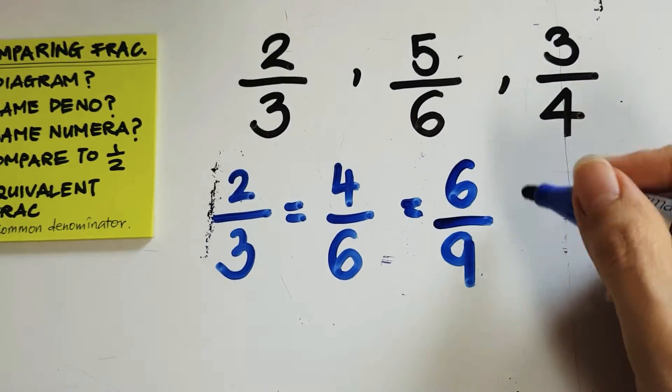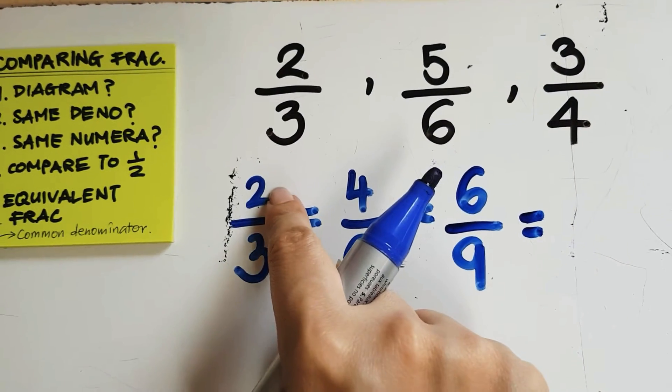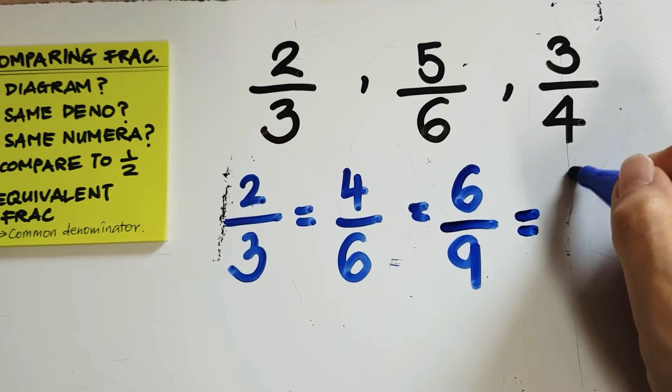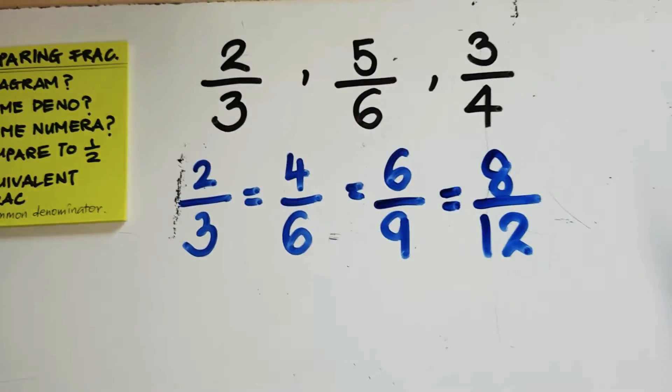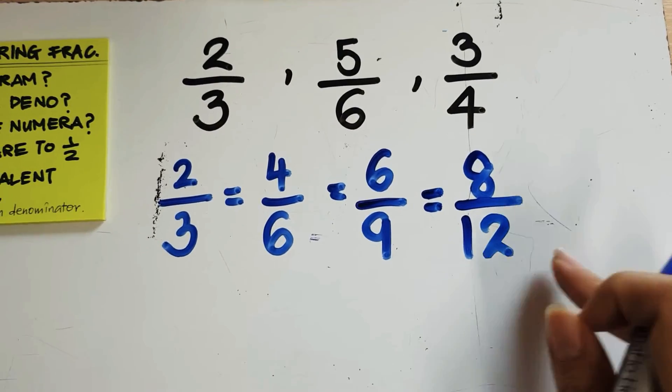And I'm going to go on. Next equivalent fraction, times 4, times 4, this will be 8/12. So, I'm going to just try stopping here, leaving space if I still need to find more equivalent.